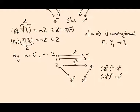So these are two possible covering transformations: one sends 1 to 1 and the other sends 1 to −1. And that's it, because 1 has to go to one of the preimages of 1 under the map z ↦ z^2, and those preimages are ±1. The covering transformation is uniquely determined by where the point 1 goes.